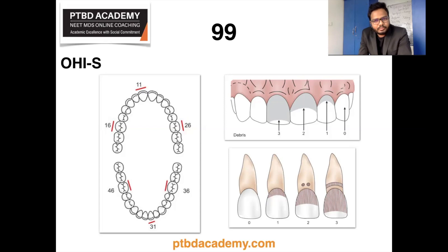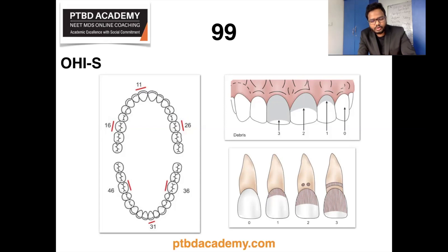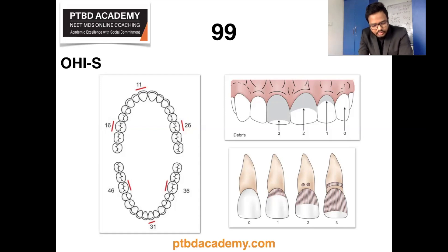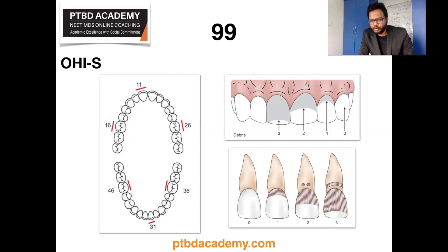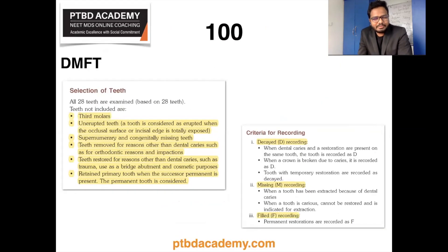Calculus index score 3 is assigned when supragingival calculus covers more than two thirds of the exposed tooth surface, or there is a continuous heavy band of subgingival calculus around the cervical portion. Individual scores: 0–0.6 is good oral hygiene; 0.7–1.8 is fair; 1.9–3.0 is poor. When combining debris and calculus scores: 0–1.2 is good; 1.3–3.0 is fair; 3.1–6.0 is poor oral hygiene.